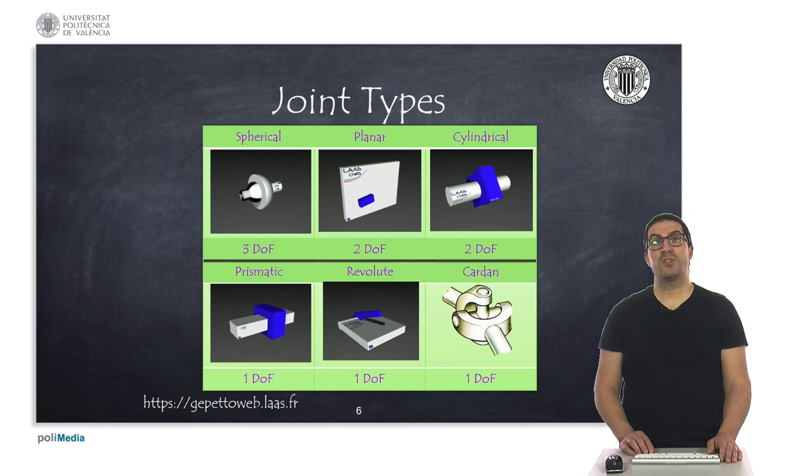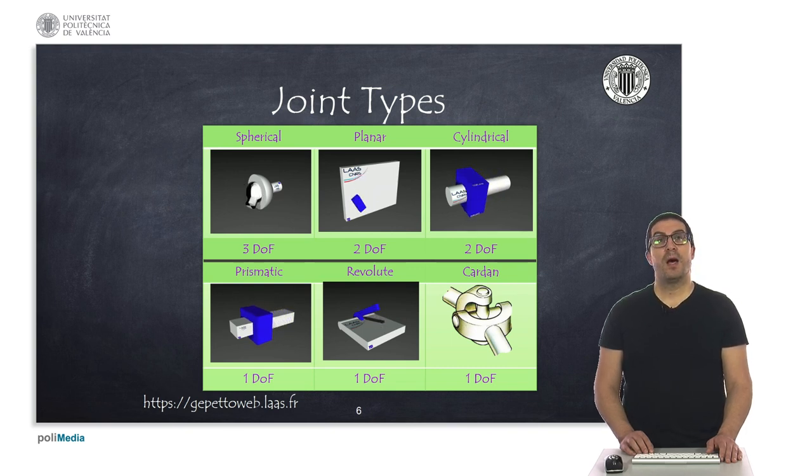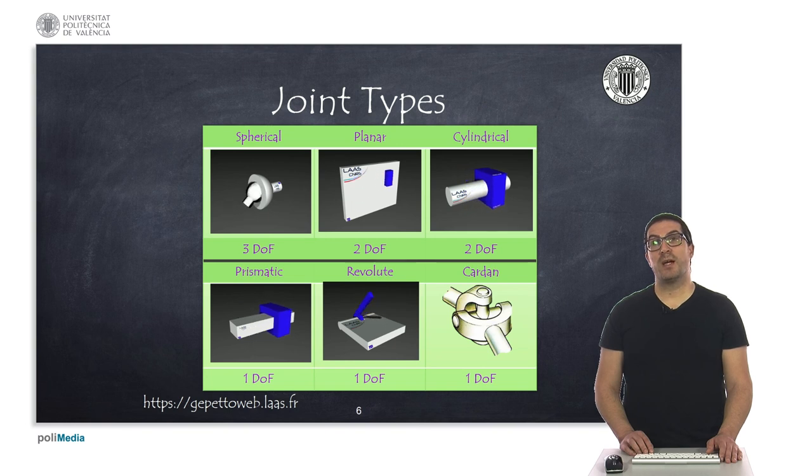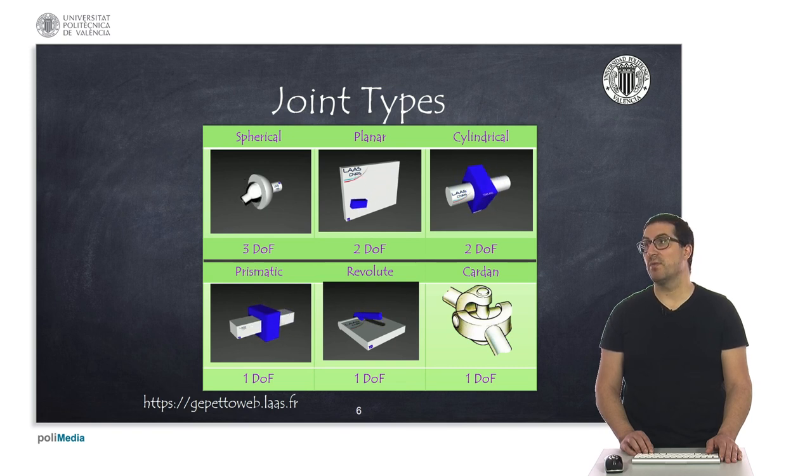On the other hand, we have joints that have one single degree of freedom. This is the case of prismatic and revolute joints, as you can see in the animations. In fact, these are the most common joint types that we can find in many robotic systems, and this is the reason why we'll study their characteristics later. I also would like to mention the cardan joint that allows one degree of freedom, and this type of joint is used within universal joints in pairs, allowing two degrees of freedom to transfer the motion from one axis to another axis with a different orientation.